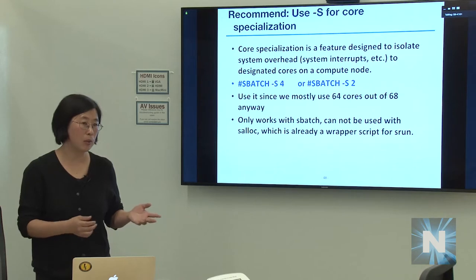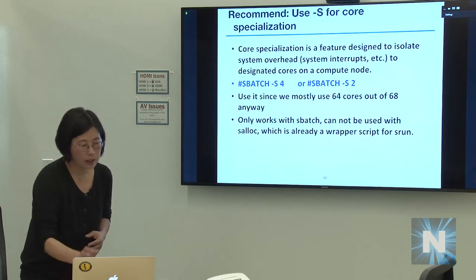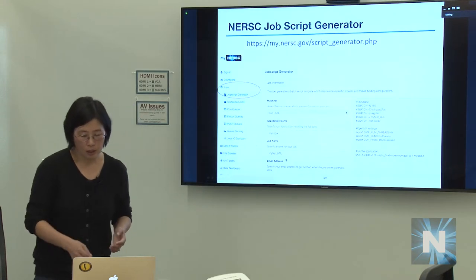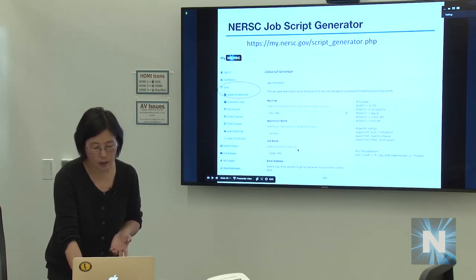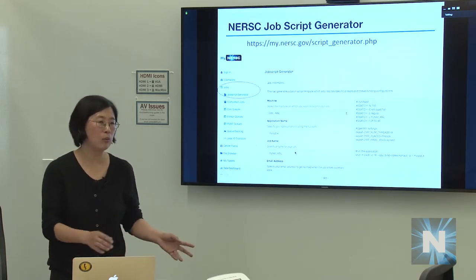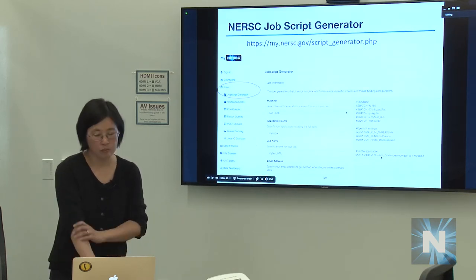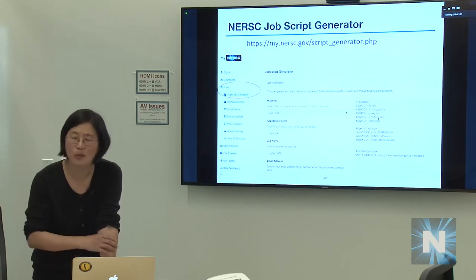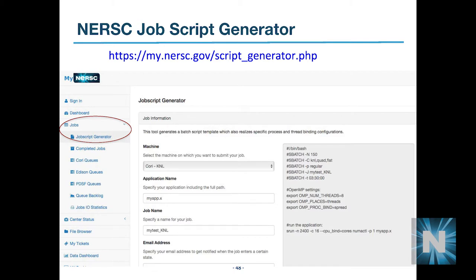NERSC provides a job script generator accessible from the MyNERSC portal under the 'Jobs' section. It supports Edison, Cori Haswell, and Cori KNL, and generates nearly complete batch scripts based on your selections for cluster mode (quad cache, quad flat, etc.), job type (pure MPI or hybrid MPI+OpenMP), node count, walltime, and other parameters.